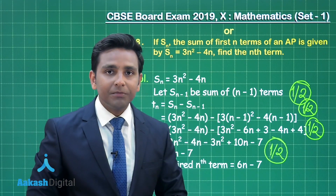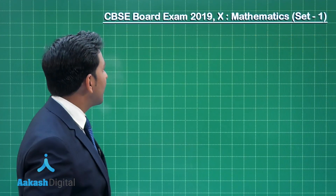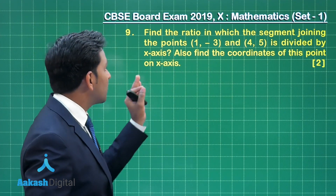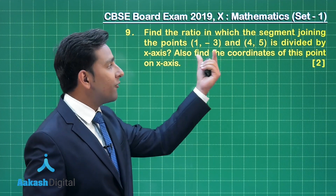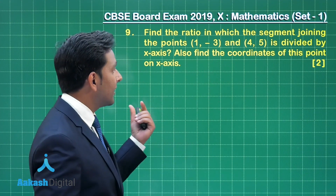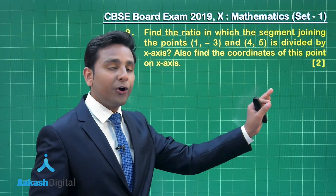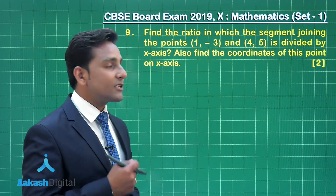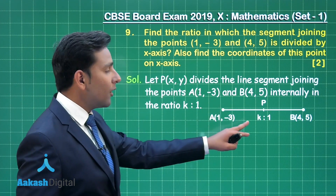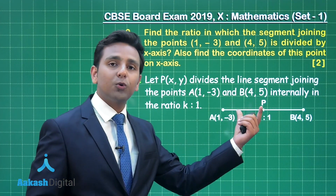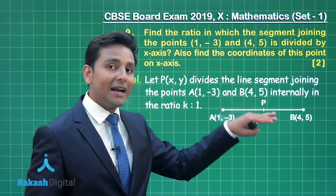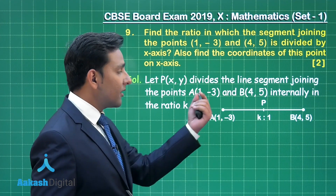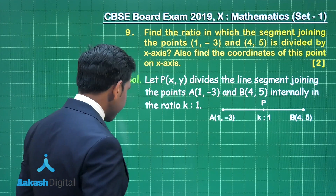Now let us solve question number 9, which is from coordinate geometry. The question says: find the ratio in which the segment joining the points (1, -3) and (4, 5) is divided by the x-axis, and find the coordinates of that point. We will use the section formula. We assume point P divides line segment AB in the ratio k to 1, and we apply the section formula to find x and y.